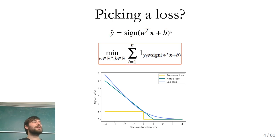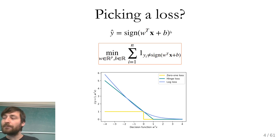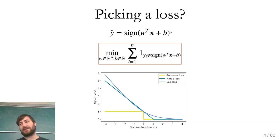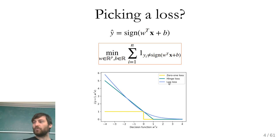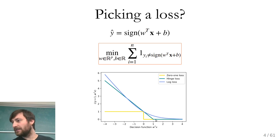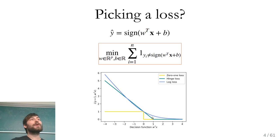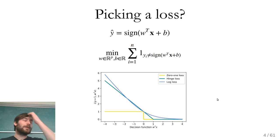The zero-one loss — the number of misclassifications — is mathematically basically impossible to find the right coefficients for. So we need something else. As we did with L1 in lasso, we can relax that and find a function that's better behaved. The two functions people commonly use are the hinge loss and the log loss, drawn here — the hinge loss is this teal, and the log loss is this blue. If you pick one or the other, you end up with logistic regression and support vector machines, the two models we'll talk about for most of today.